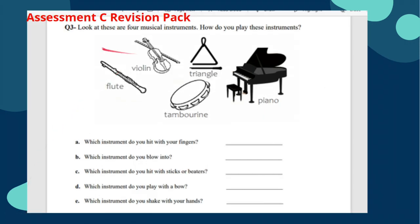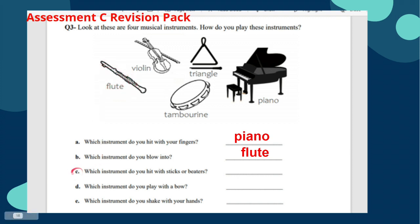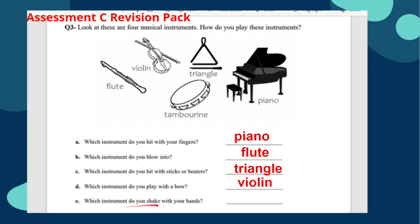Question three: look at these five musical instruments — flute, violin, tambourine, triangle, and piano. Which instrument do you hit with your fingers? The piano. Which instrument do you blow into? The flute. Which instrument do you hit with sticks or beaters? The triangle. Which instrument do you play with a bow? The violin. And which instrument do you shake with your hands? The tambourine.